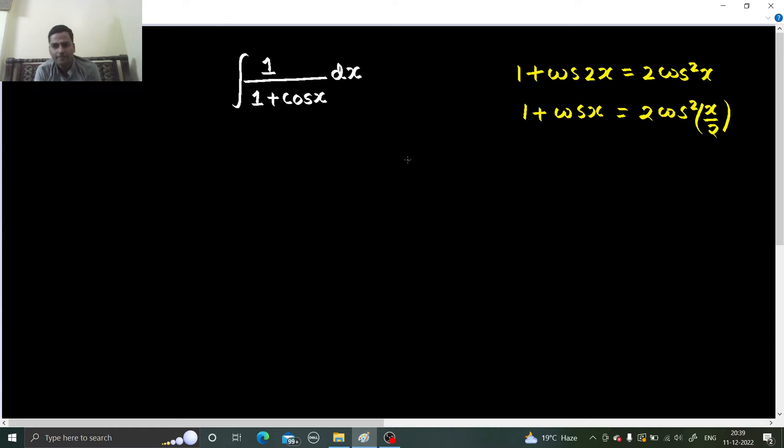If you want to replace that, cos square 1 upon cos square will definitely become secant square x by 2 with 1 by 2 outside. But because here we have dx and the integral will be in terms of x by 2, we can solve that by substitution, but currently I am not going to focus on substitution. That will be covered later on.